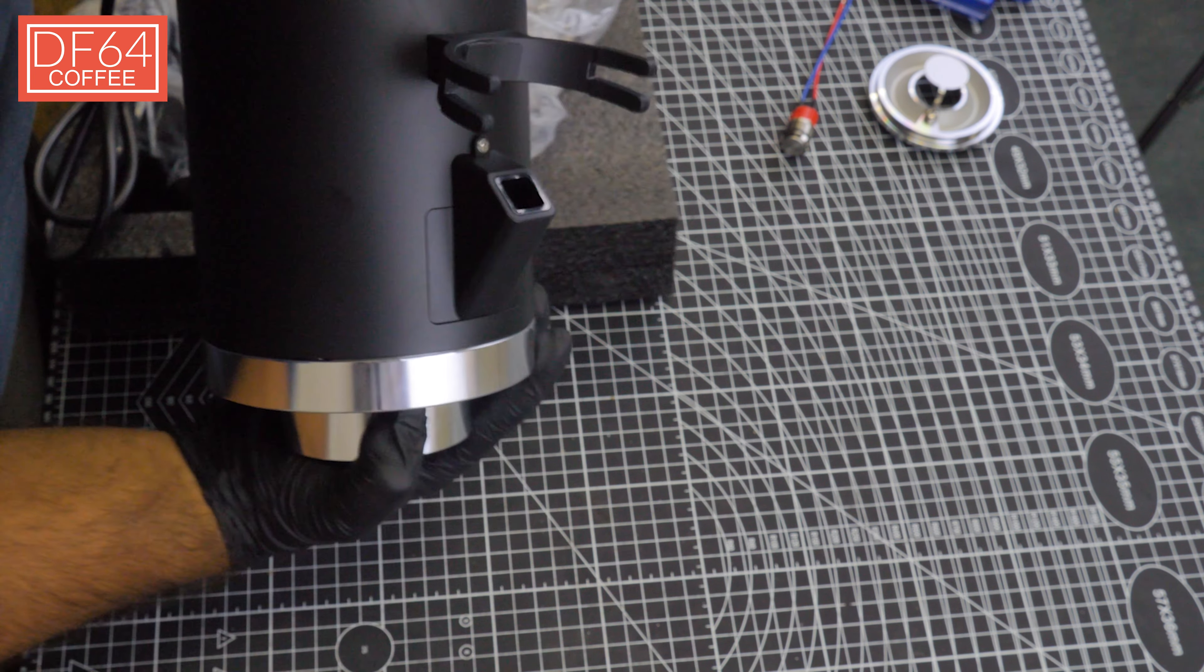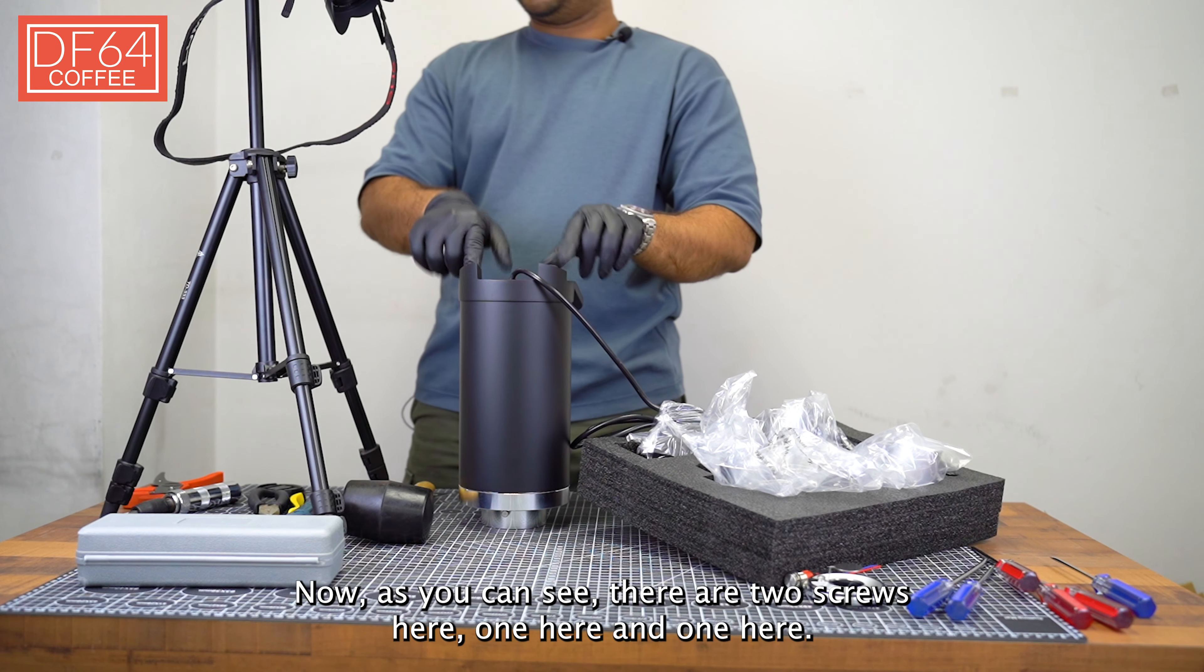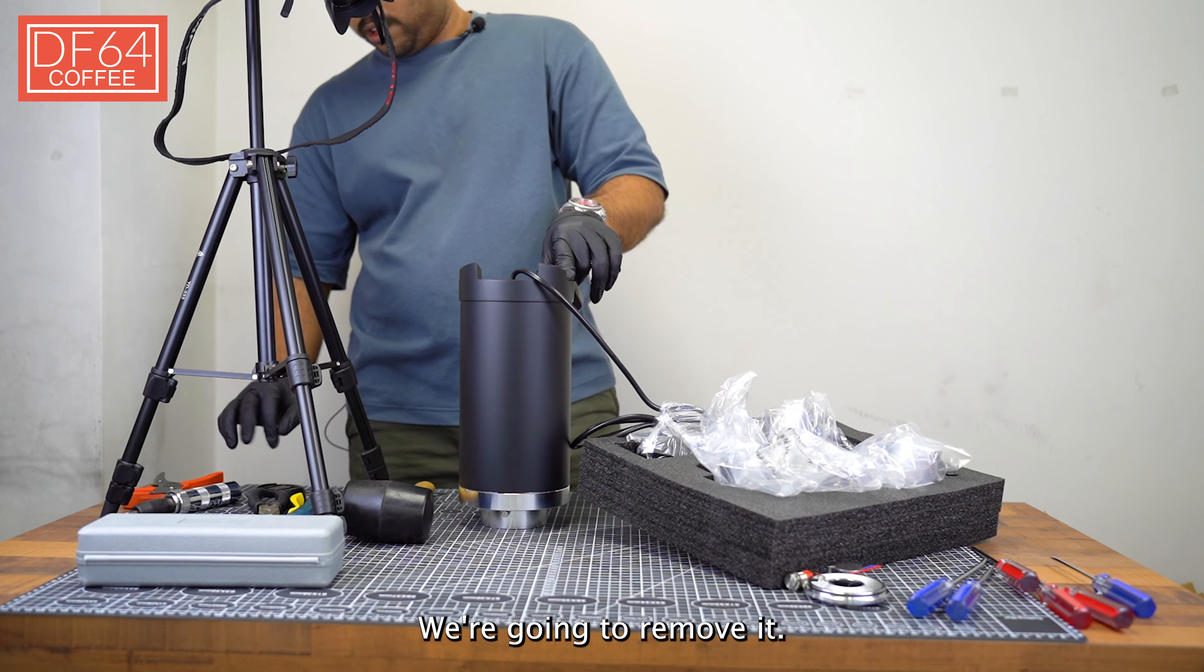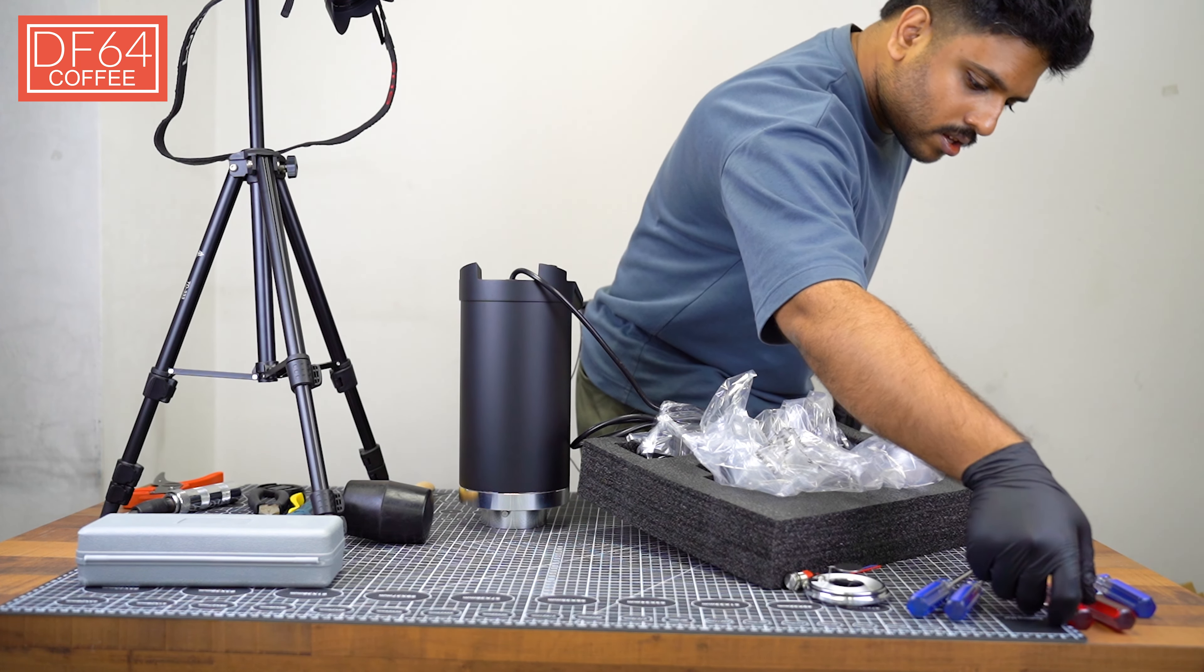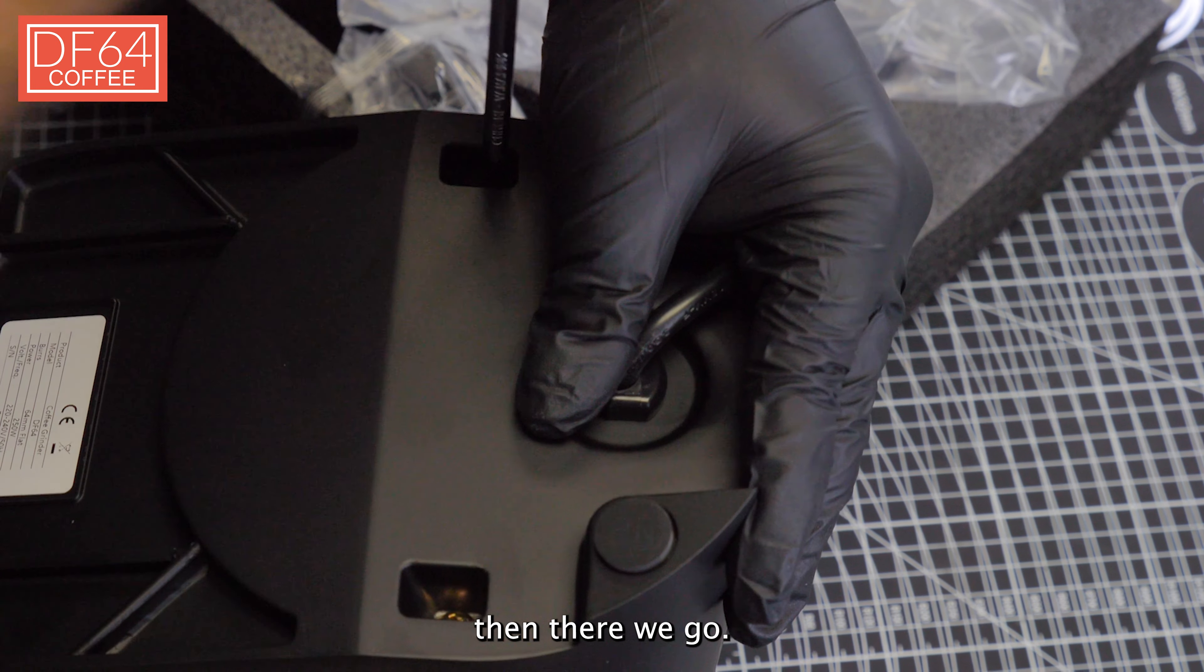Okay, so the first step is, as you can see I have the DF64 right here. Take out the anti-popcorn. When I do that, I'm going to flip it over. Just flip it over safely. Make the front face me later on so I can flip it backwards.